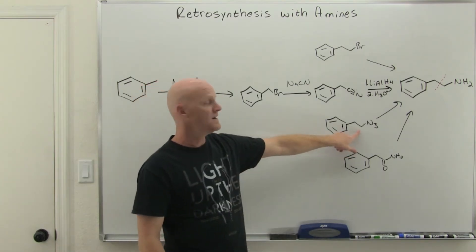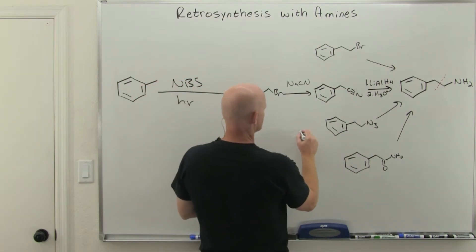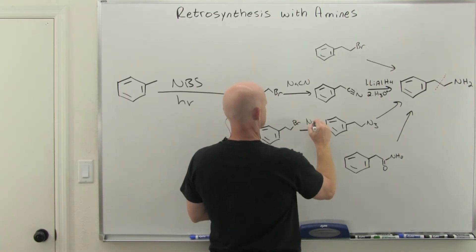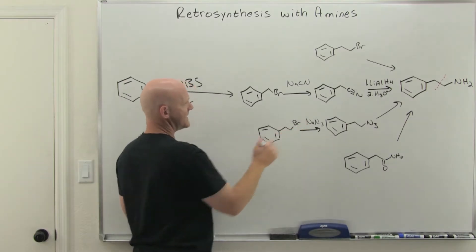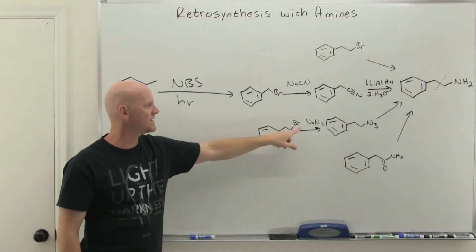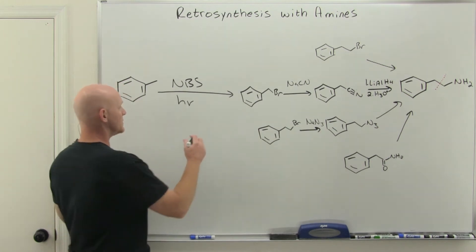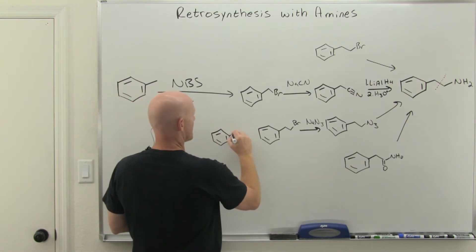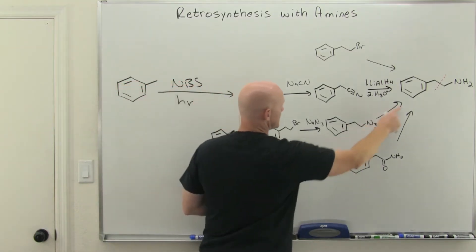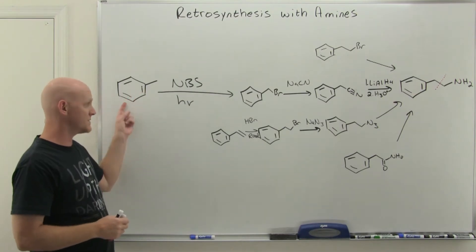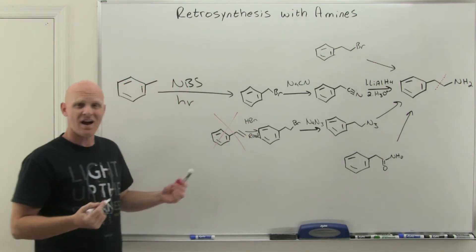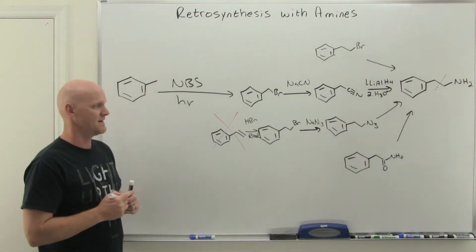Now could we go the azide route? The only way to make an azide is also SN2, so we'd need the two carbons already in place and then NaN3. But getting a bromine out on that two-carbon chain is not easy — the only way you know is anti-Markovnikov addition across an alkene using HBr and peroxide. We're already three steps in and still have a long way to go, so let's rule this out — it's going to be 10 or 12 steps.